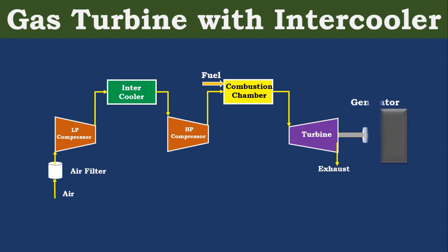We can generate power by coupling a generator to the output shaft. Initially, the compressor runs with the help of a battery. Later on, the compressor consumes power from the turbine. Whatever power is produced by the turbine, that will be consumed by the compressor — maximum 70 to 75 percent.